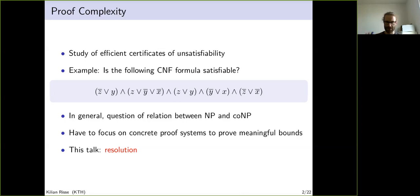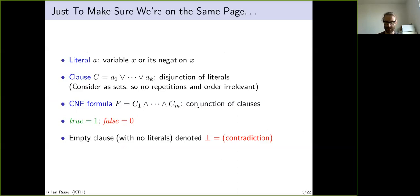A literal is a variable X or its negation. A clause is a disjunction of literals and a CNF formula is the conjunction of clauses. We denote true by one and false by zero, and contradiction or the empty clause is denoted by bottom because it cannot be satisfied by any truth assignment.